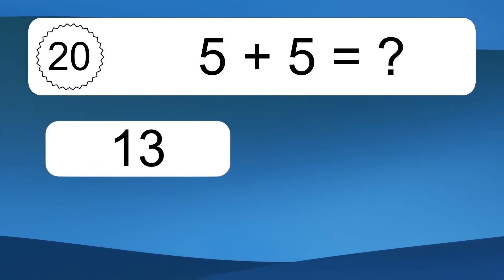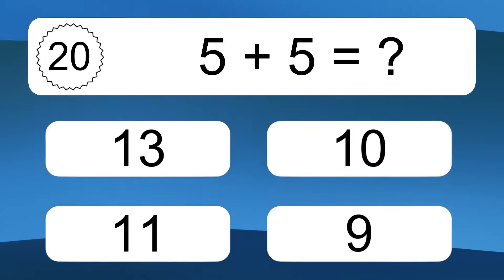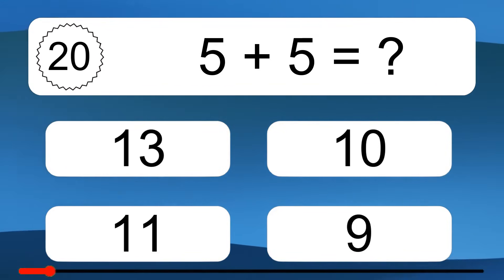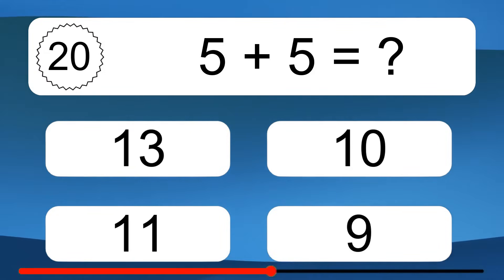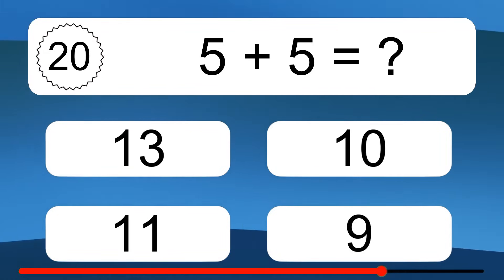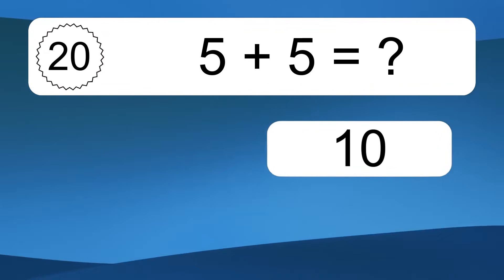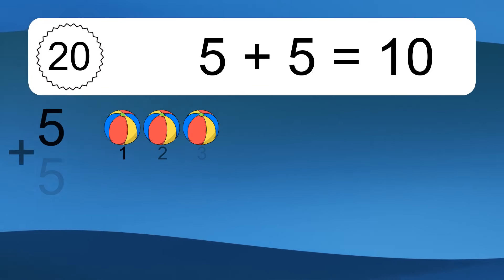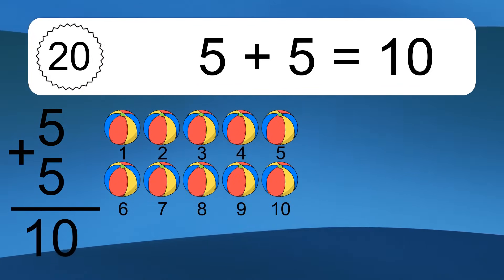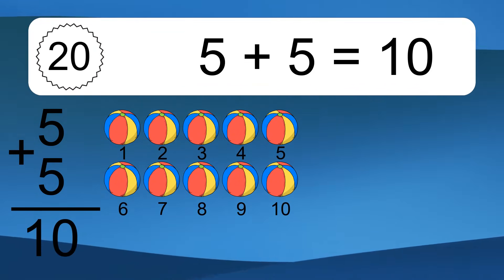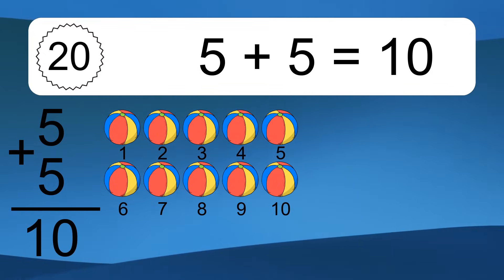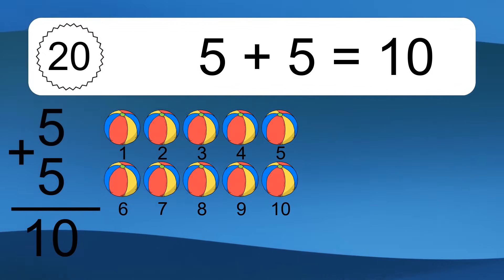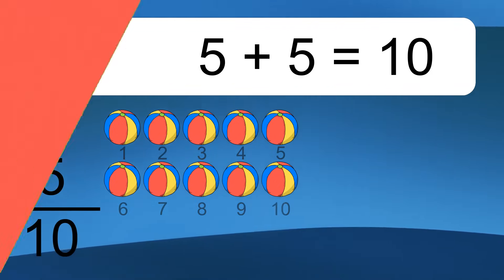5 plus 5 equals what? 5 plus 5 equals 10. Let's count it. 1, 2, 3, 4, 5, 6, 7, 8, 9, 10.